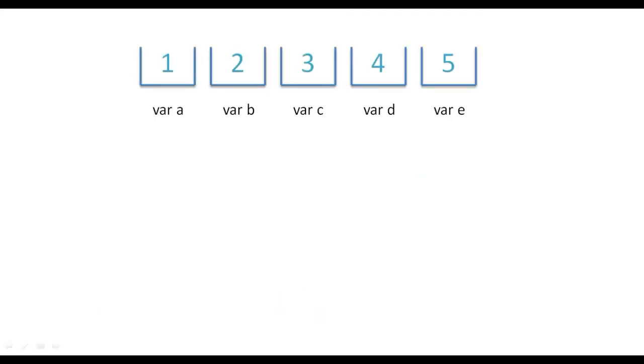Suppose we have five variables as such and we need to perform operations on them together. Now in this case, creating five variables for each will be unnecessary and it will take unnecessary time and code. Imagine if you have 500 variables - it will be almost impractical to create so many variables, and that is the reason we store them together in an array.